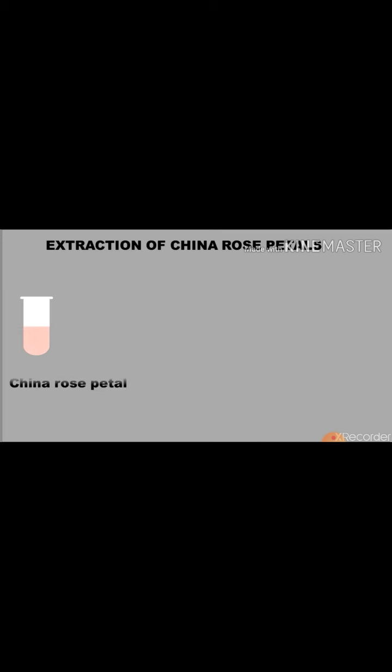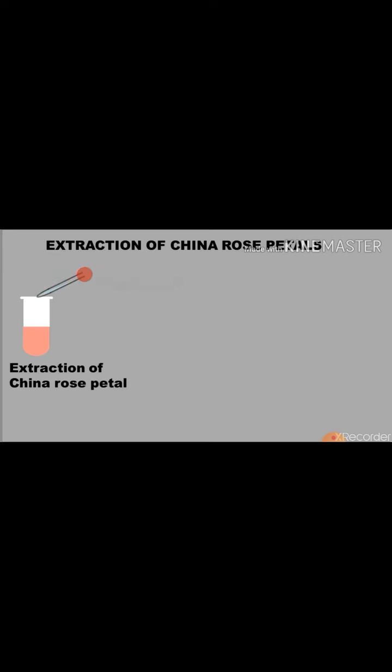Let's see how extraction of China rose petals is used as an indicator. Take a test tube half-filled with the extraction of China rose petals. Now add few drops of acid. You will notice dark pink or magenta color will appear. It means in the presence of acid, the extraction of China rose petals changes into dark pink or magenta color.